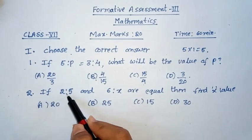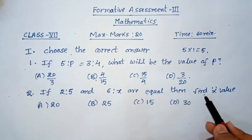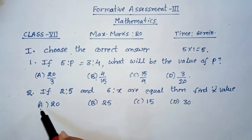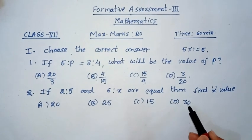Second question, if 2 is to 5 and 6 is to X are equal, then find X value. Option A, 20. Option B, 25. Option C, 15. Option D, 30.